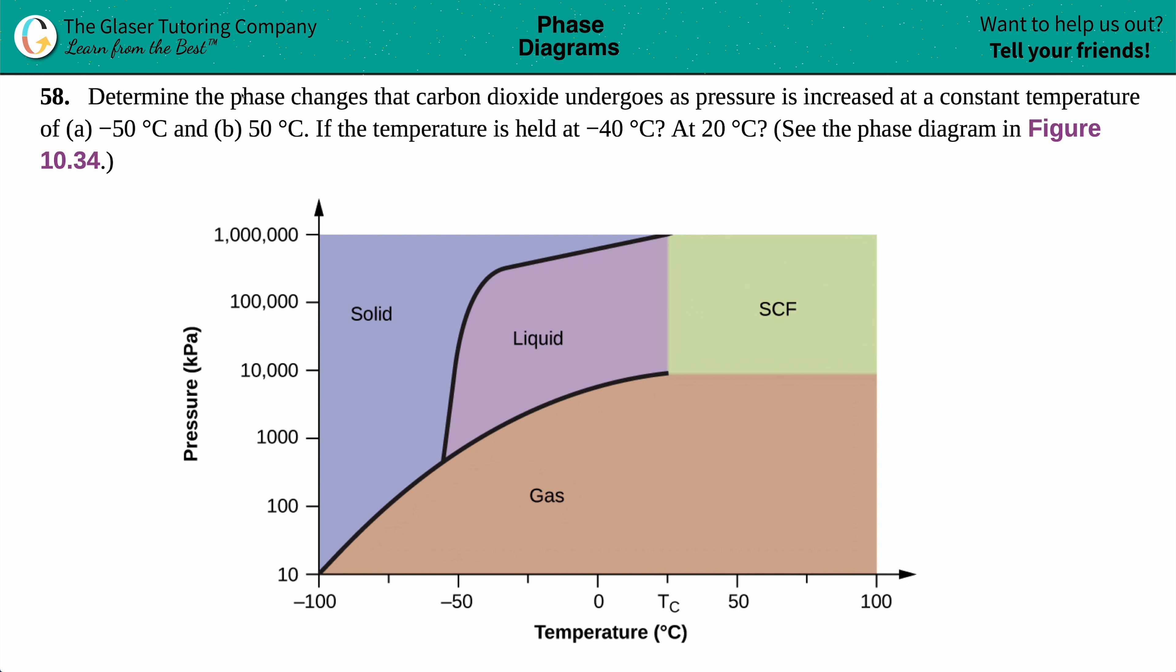Number 58, determine the phase changes that carbon dioxide undergoes as pressure is increased at a constant temperature. We have different temperatures: negative 50 degrees Celsius, 50 degrees Celsius, and also if the temperature is held at negative 40 degrees Celsius and 20 degrees Celsius. See the phase diagram in this figure, which is figure 10.34.